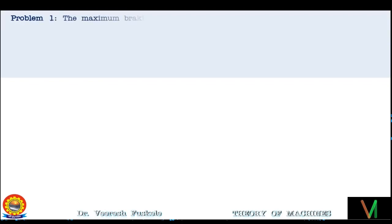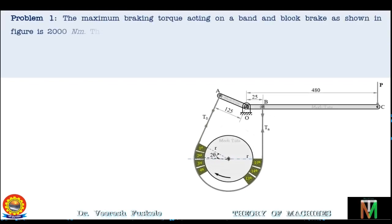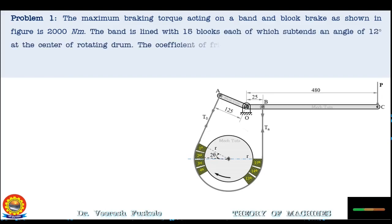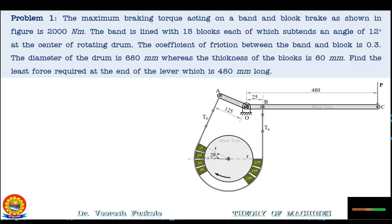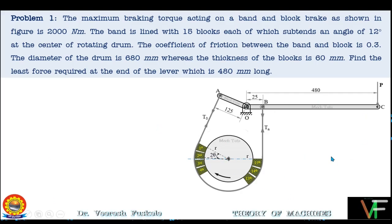The problem statement is as follows. The maximum braking torque acting on a band and block brake as shown in figure is 2000 Nm. The band is lined with 15 blocks, each of which subtends an angle of 12 degrees at the center of the rotating drum. The coefficient of friction between the band and the block is 0.3. The diameter of the drum is 680 mm whereas the thickness of the blocks is 60 mm. Find the least force required at the end of the lever which is 480 mm long.